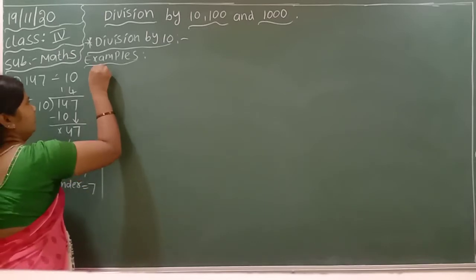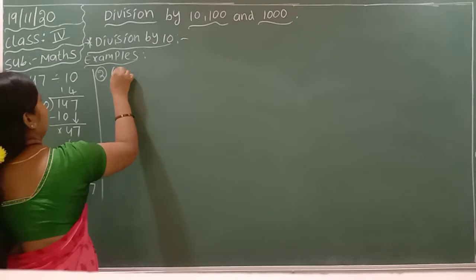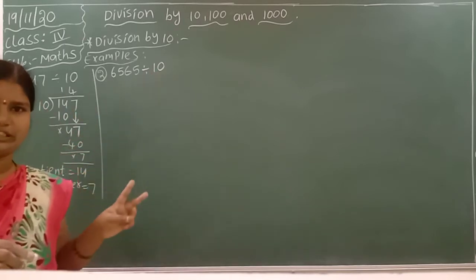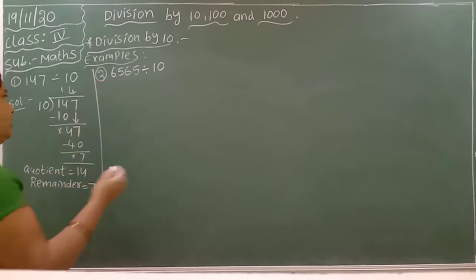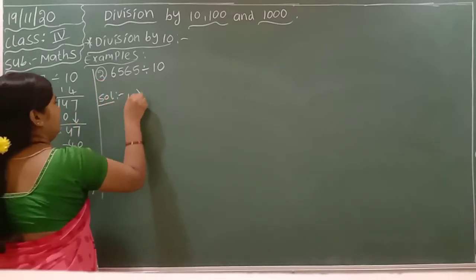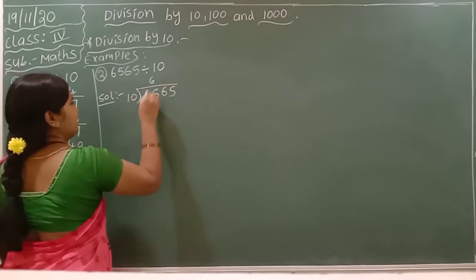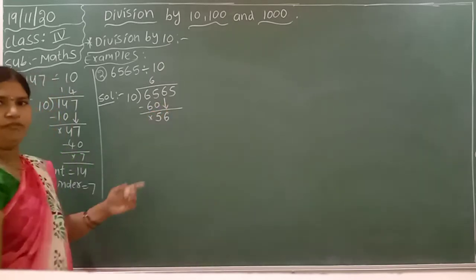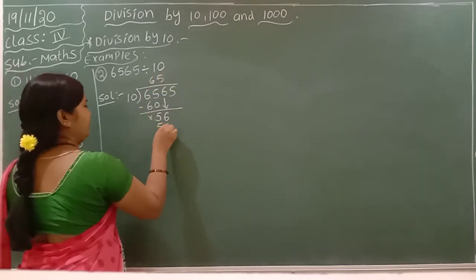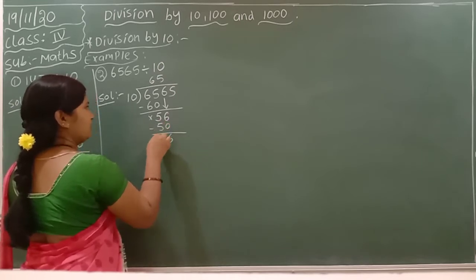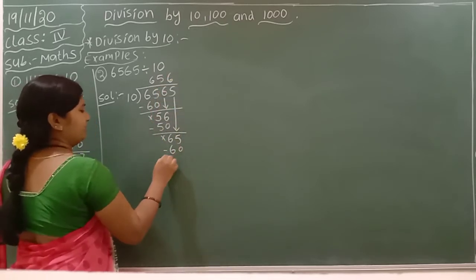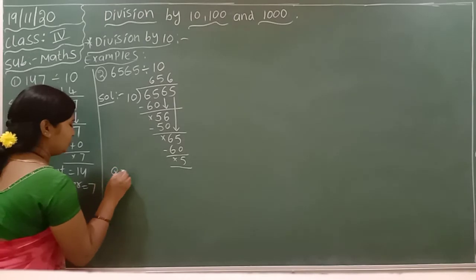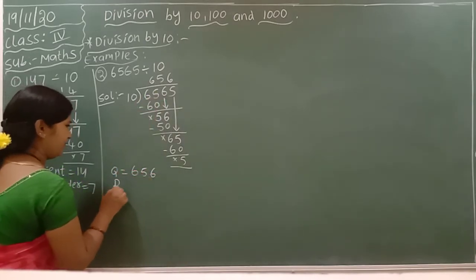Let us see one more example. Second question: 6565 divided by 10. Here we are taking 10 as a two-digit divisor and 6565 as a four-digit dividend. Working through the division: the quotient is 656 and the remainder is 5.